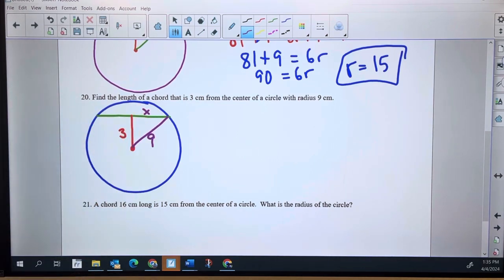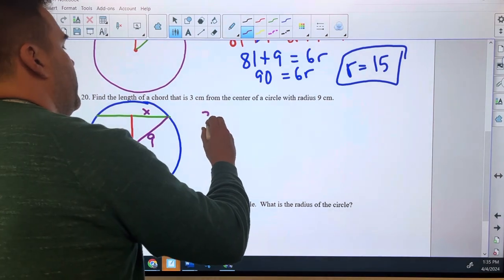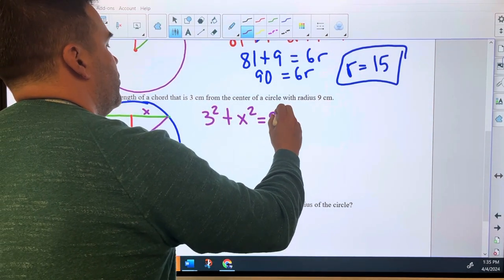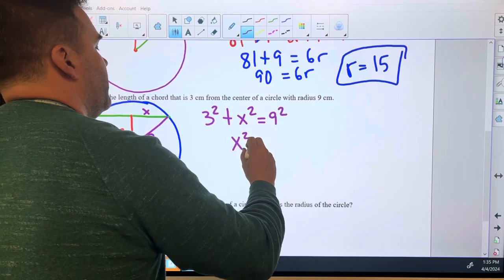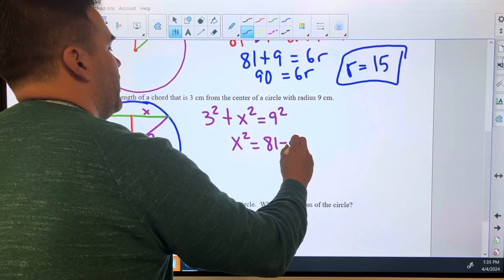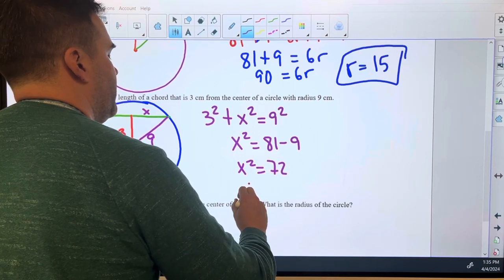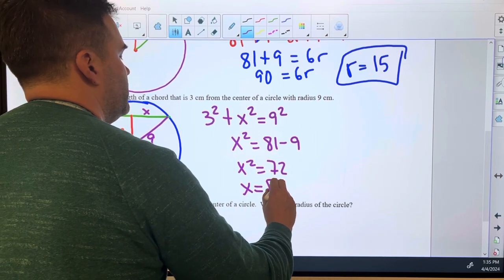We're trying to find the length of the chord. We can find this piece of the chord and then double it. Since it's perpendicular to a radius, the red line, even though I didn't finish the red line, it is a radius. Three squared plus X squared equals nine squared. X squared equals 81 minus 9. X squared equals 72. X equals root 72.